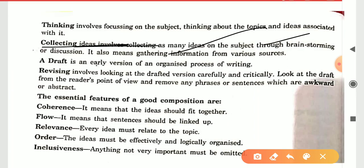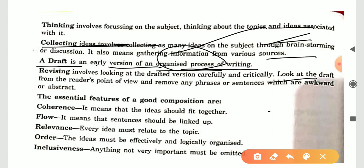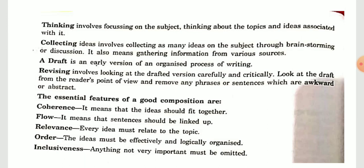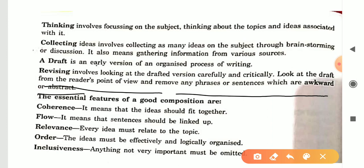A draft is an early version of the organized process of writing. The organized process you did before — you made your mind, noted your points in rough work — that is drafting. Revising involves looking at the drafted version carefully and critically. When you have written it, revise it once again. Look at the draft from the reader's point of view, as the examiner will read it, and remove any phrases or sentences which are awkward or abstract.